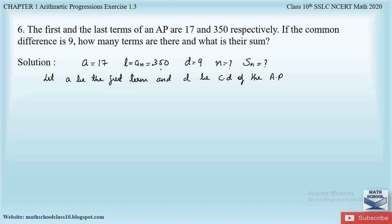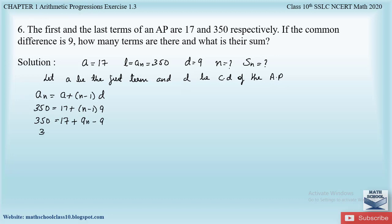Using the nth term formula: aₙ = a + (n−1)d. Substituting: 350 = 17 + (n−1)×9 = 17 + 9n − 9 = 8 + 9n. So 350 − 8 = 9n, giving 342 = 9n.